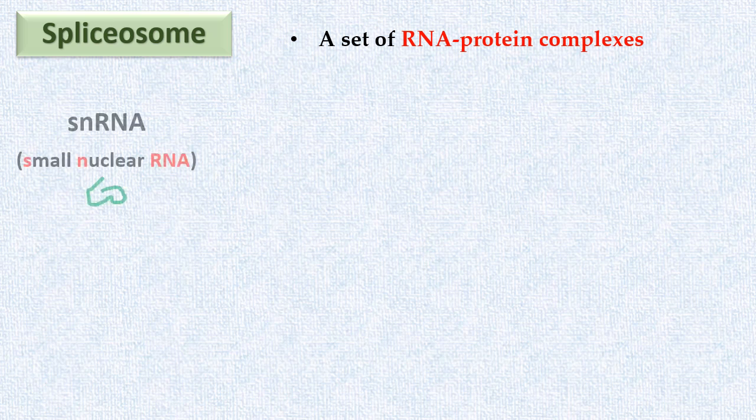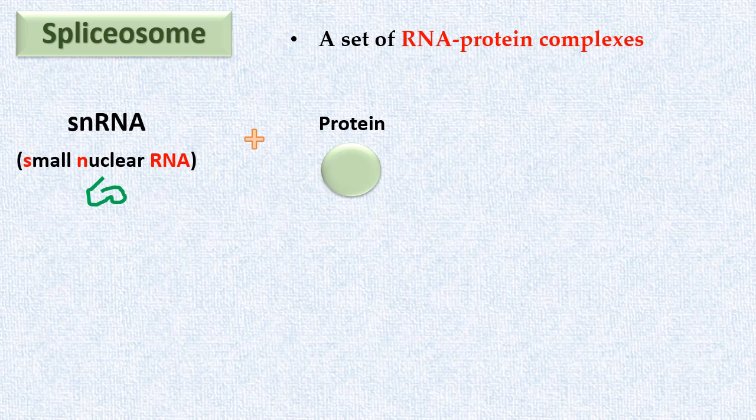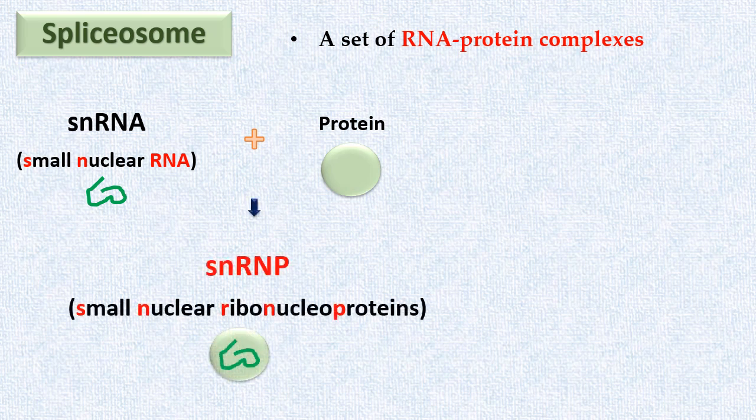Spliceosome is a complicated intracellular machine. It is a set of RNA protein complexes. Each RNA protein complex is made up of a small nuclear RNA and proteins. This RNA complex is known as small nuclear ribonuclear proteins, abbreviated as snRNP and pronounced as SNRP. So spliceosome is made up of SNRPs.